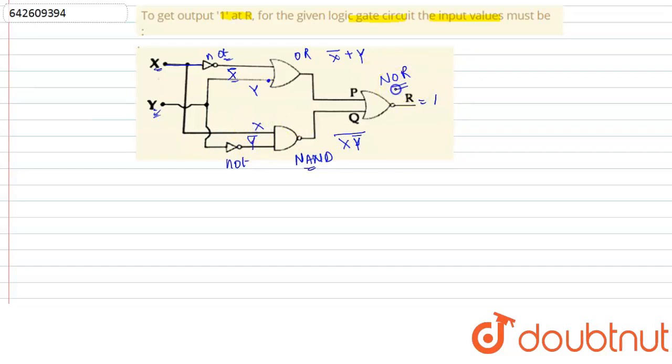So due to which, the NOR gate, the output of the NOR gate will be as following: (x̄ + y) + x·ȳ whole bar, and whole bar again. This will be the output of R.